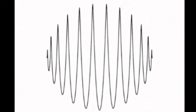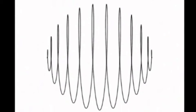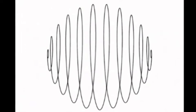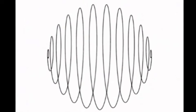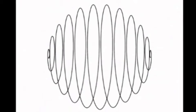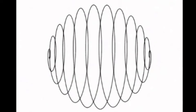Think of waves on the surface of water. Here we can describe two entirely different things. Either we may observe how the undulatory surface forming the boundary between water and air alters in the course of time, or else, with the help of small floats, for instance, we can observe how the position of the separate particles of water alters in the course of time. If the existence of such floats for tracking the motion of the particles of the fluid were a fundamental impossibility in physics, if, in fact, nothing else whatever were observable than the shape of the space occupied by the water as it varies in time, we should have no ground for the assumption that water consists of movable particles.